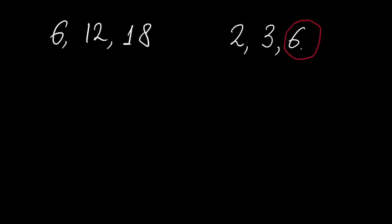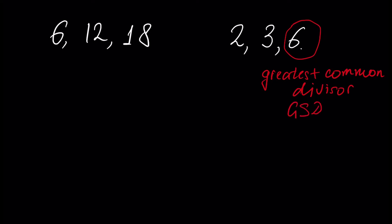Between these divisors, number six is the biggest, and this number is called the greatest common divisor, or shortly GCD. This is the definition of GCD — it is simply the greatest common divisor of a set of numbers.